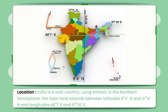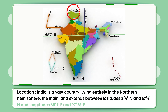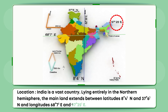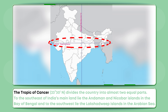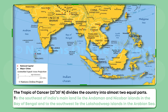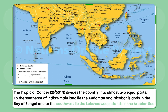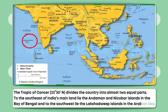Location: India is a vast country lying entirely in the Northern Hemisphere. The mainland extends between latitudes 8 degrees 4 N and 37 degrees 6 N and longitudes 68 degrees 7 E and 97 degrees 5 E. The Tropic of Cancer, 23 degrees 3 N, divides the country into almost two equal parts. To the southeast of India's mainland lie the Andaman and Nicobar Islands in the Bay of Bengal, and to the southwest lie the Lakshadweep Islands in the Arabian Sea.